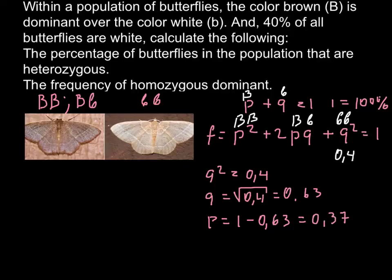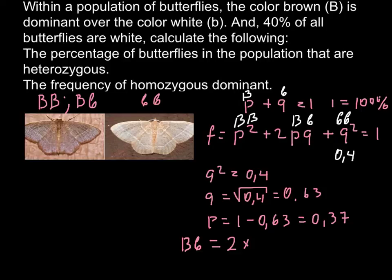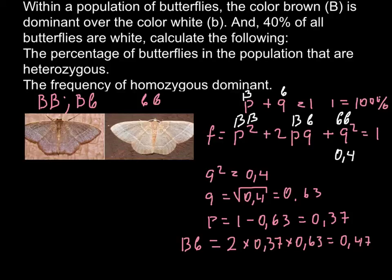Now when we know p and q, we can find the heterozygous frequency, capital B small b. According to our formula it equals 2 multiplied by p, which is 0.37, multiplied by q, which is 0.63. If we multiply all these numbers, we get 0.47. So 0.47 is the frequency of the heterozygous.